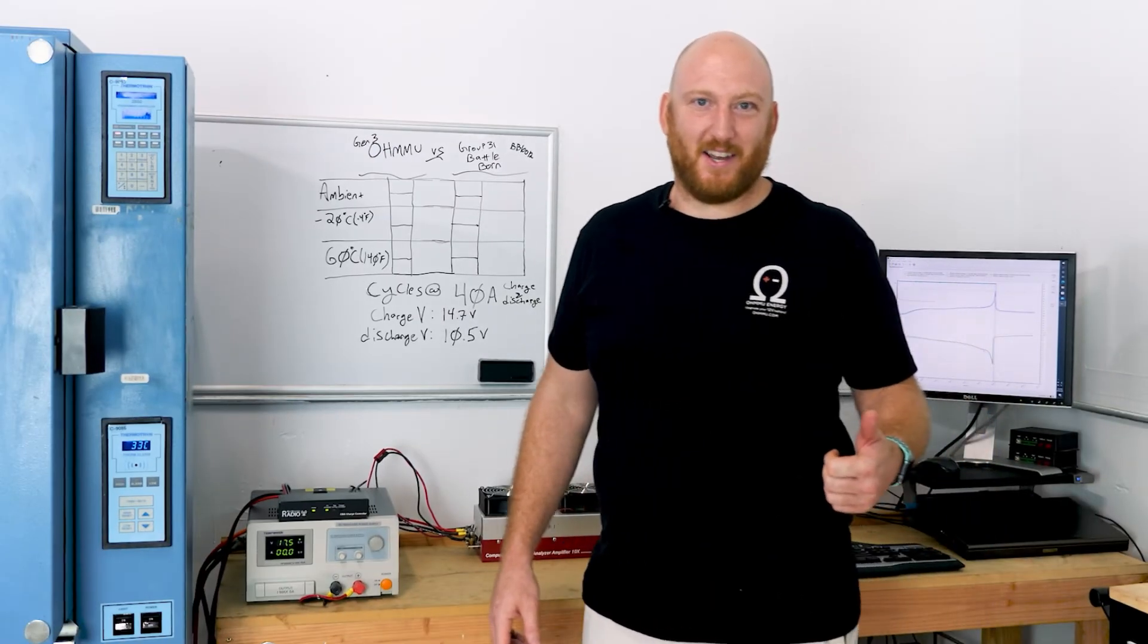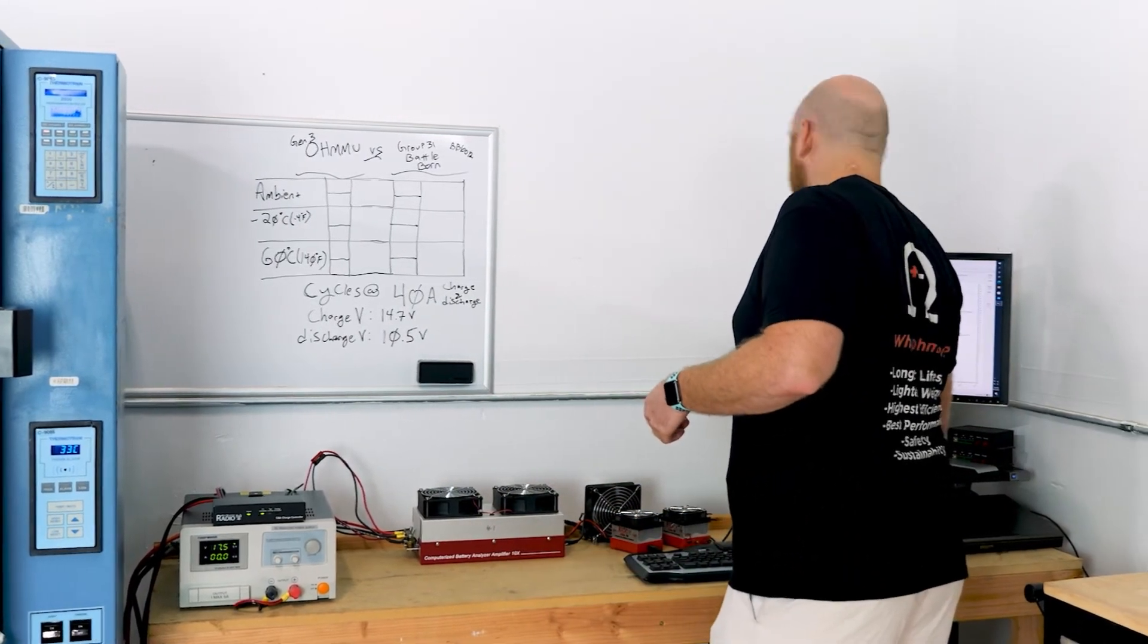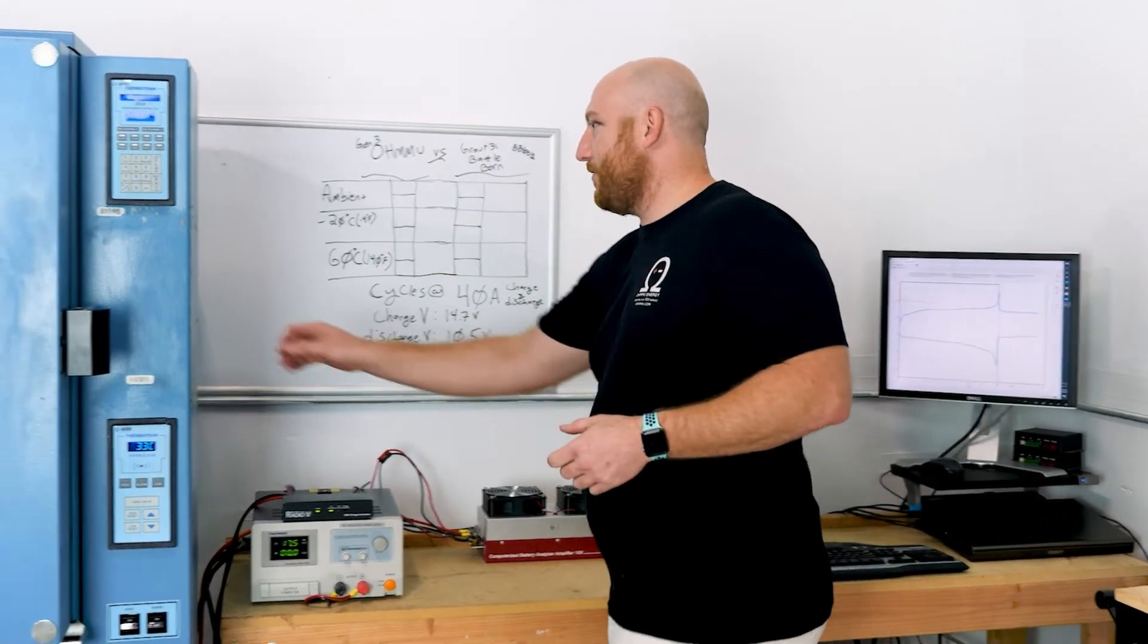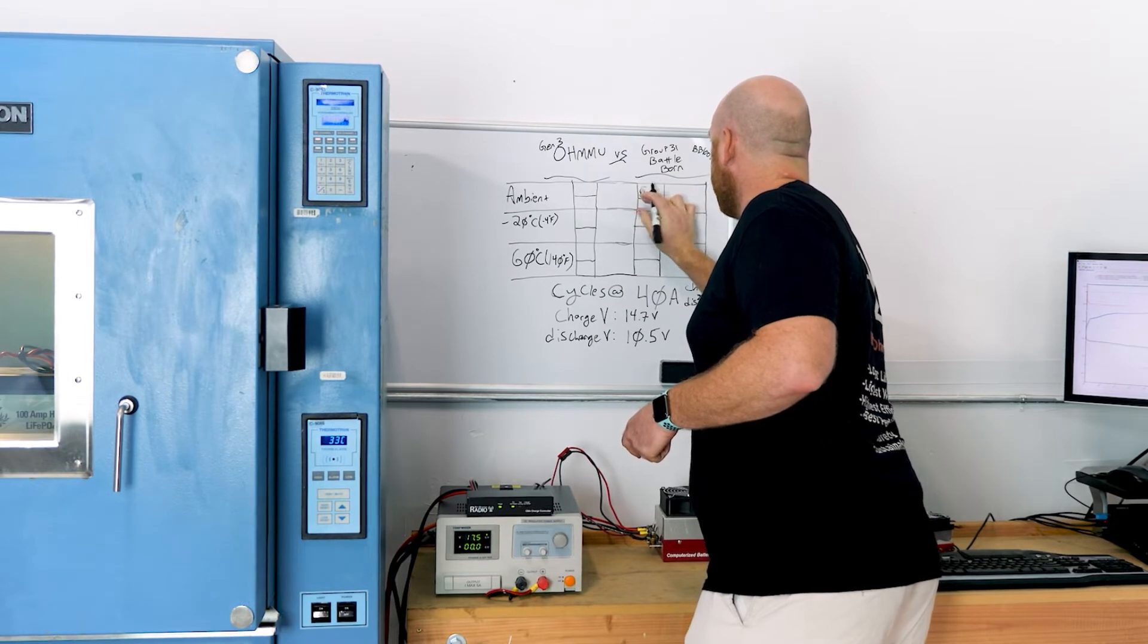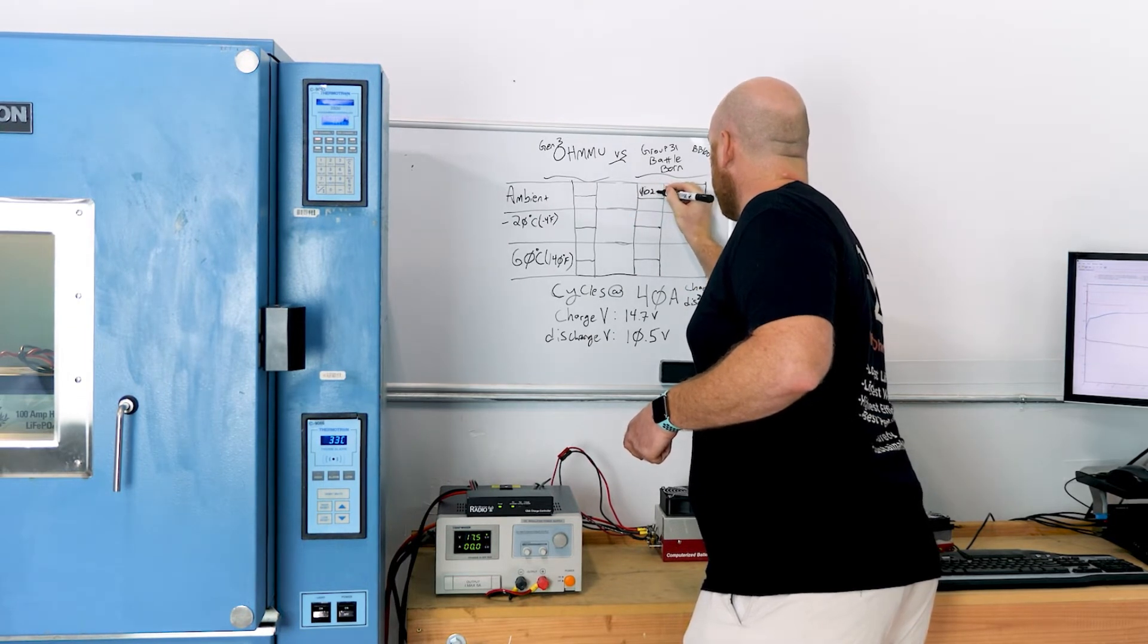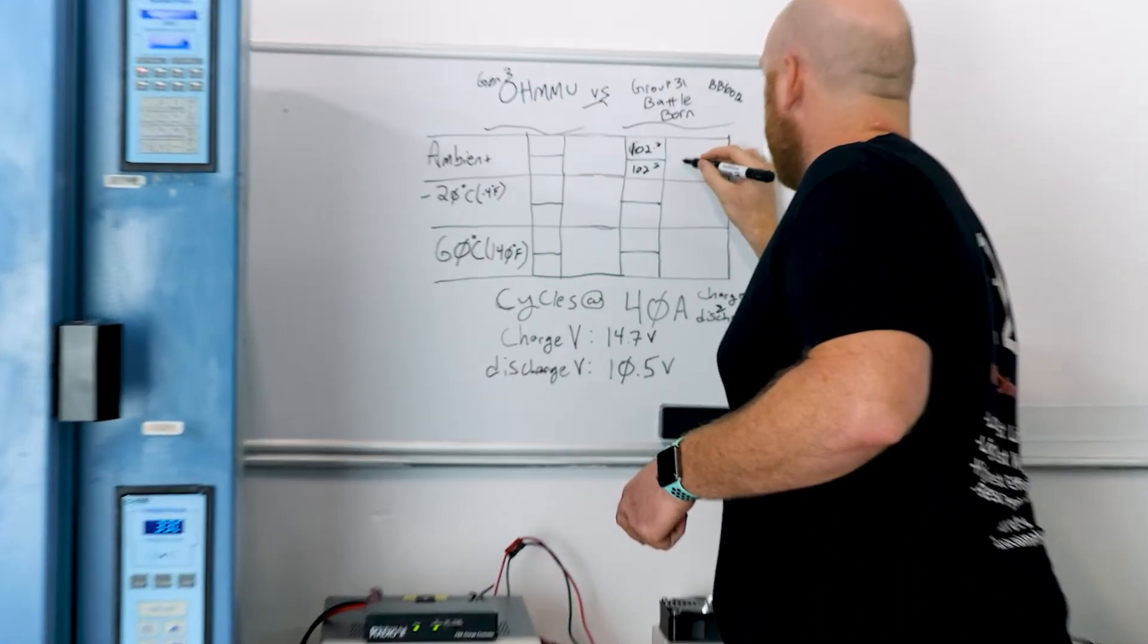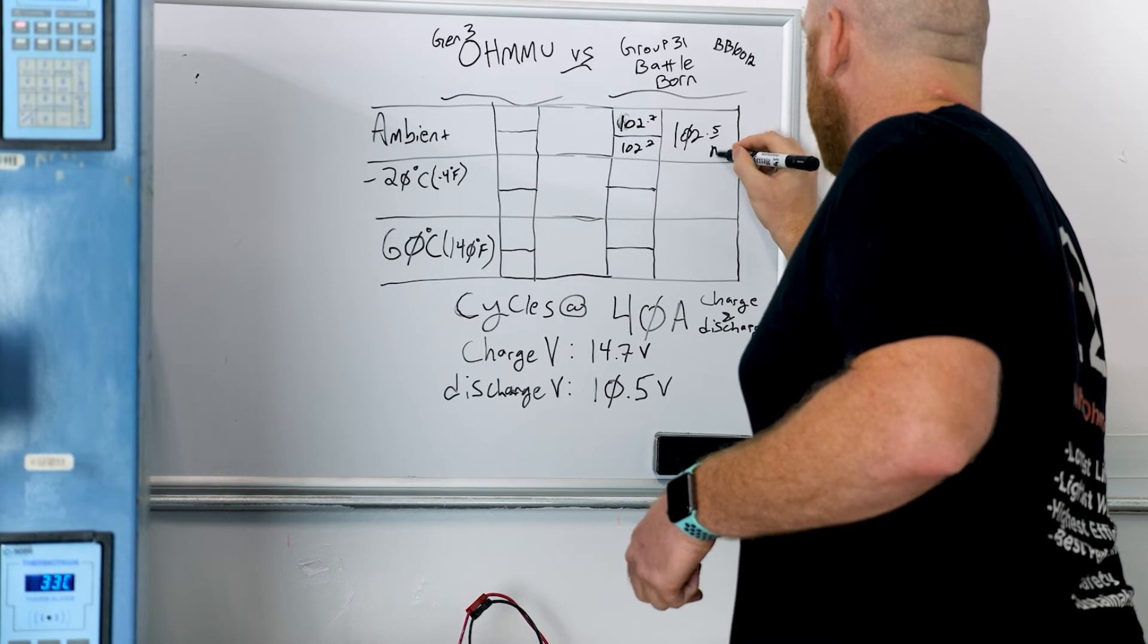Test one is done for the Battleborn battery. Looks like our results were 102.7 and 102.2. We'll throw that on the board. For Battleborn at ambient, 102.7, 102.2, which averages to 102.5 amp hours.